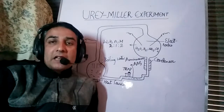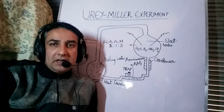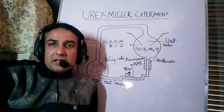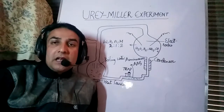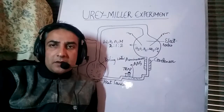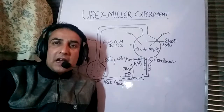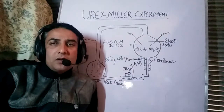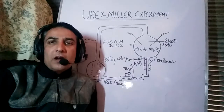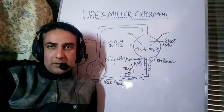With regard to the proof of this theory, an experiment was carried out by Stanley Urey and Miller in 1953, in which they simulated the conditions present upon the primitive Earth inside the laboratory. It is a simulation experiment, and they found that certain biomolecules like amino acids and sugars were formed during this experiment.